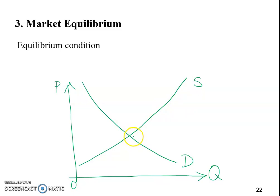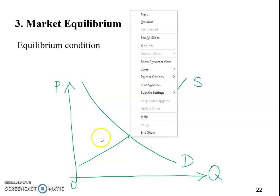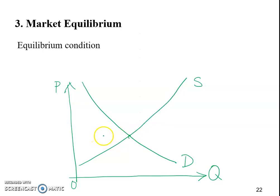You would find that once we put them on the same graph there will be a very unique place here which is interaction between the two curves. That is very unique because at this specific price, let's call it P star, we find that the quantity demanded equals quantity supply.